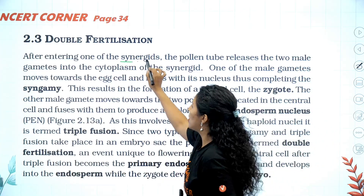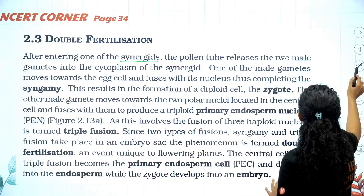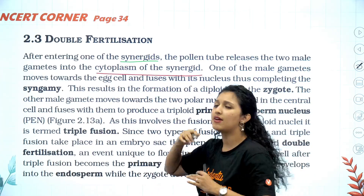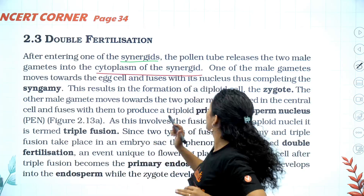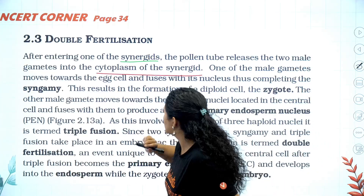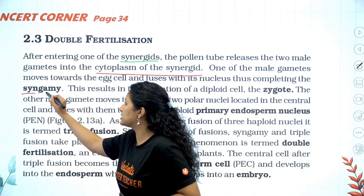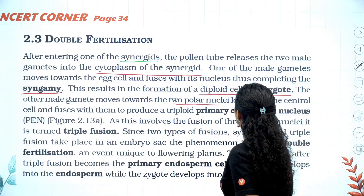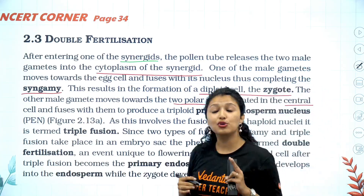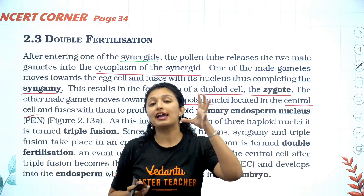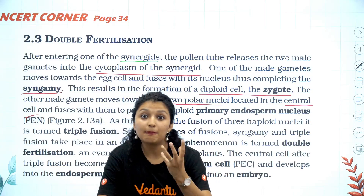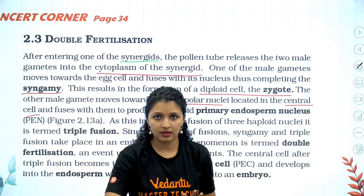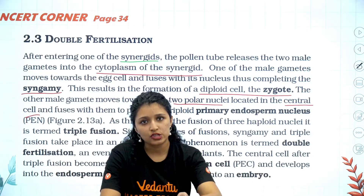After entering one of the synergids, the pollen tube releases the two male gametes into the cytoplasm of the synergid. One of the male gametes moves towards the egg cell and fuses with its nucleus, completing syngamy — you get a diploid zygote. The other male gamete goes to the two polar nuclei in the central cell. The product is a triploid nucleus called the primary endosperm nucleus, and that cell is called the primary endosperm cell.